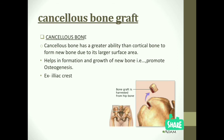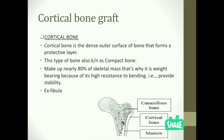In cortical bone grafting, the cortical bone is the protective layer that is dense and present at the outer surface. This type of bone is also known as compact bone. It makes up 80% of skeletal mass and because of this it has high resistance to bending, which ultimately provides stability. An example is the fibula.